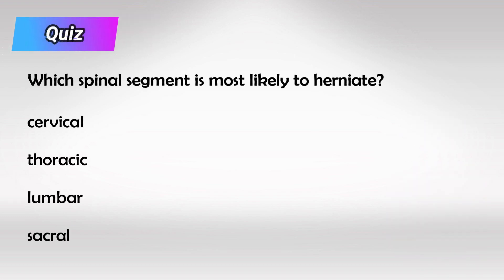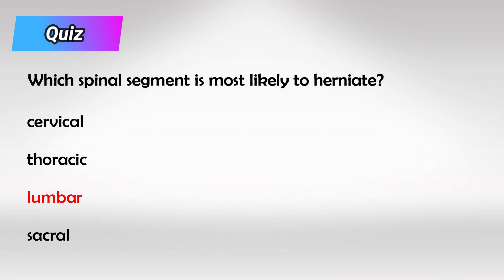Here's a small quiz: outside of Cauda Equina Syndrome, which segment of the spinal cord is most likely to present with disc herniation? The answer is the lumbar spine.